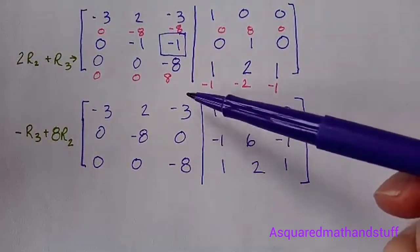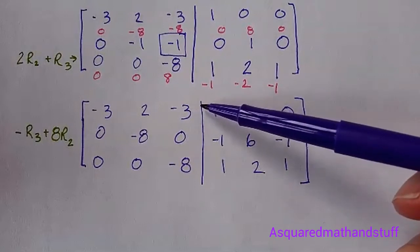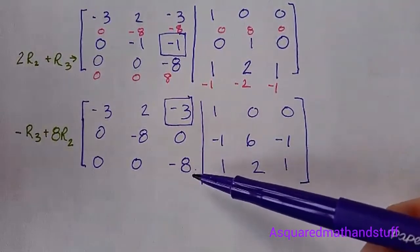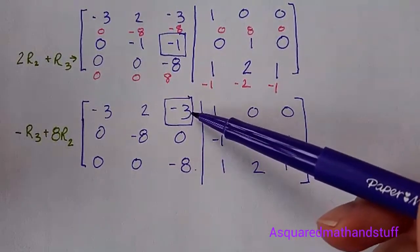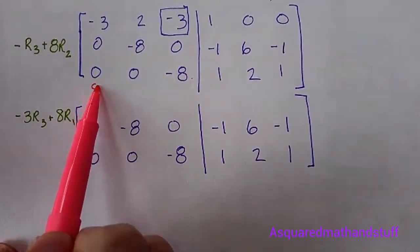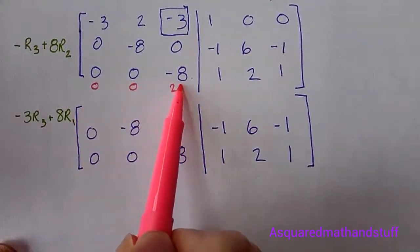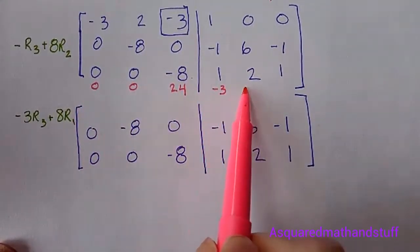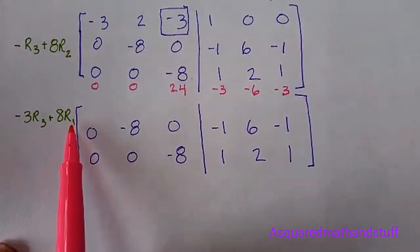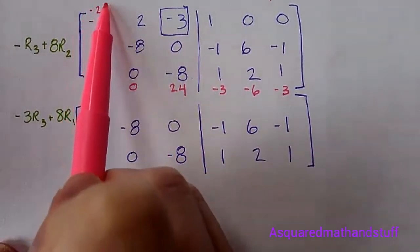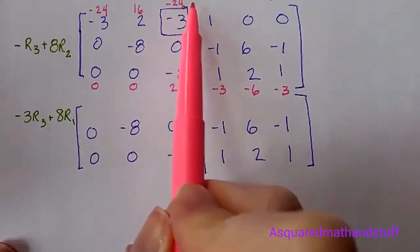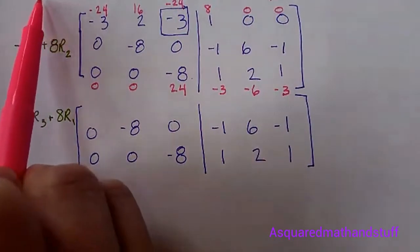I now have the 0 here. Let's work on getting a 0 in this negative 3 position. So I will take negative 3 times row 3 and add it to 8 times row 1. Negative 3 times row 3, we will have 0, 0, positive 24, negative 3, negative 6, negative 3. 8 times row 1, we will have negative 24, 16, negative 24, 8, 0, and 0.